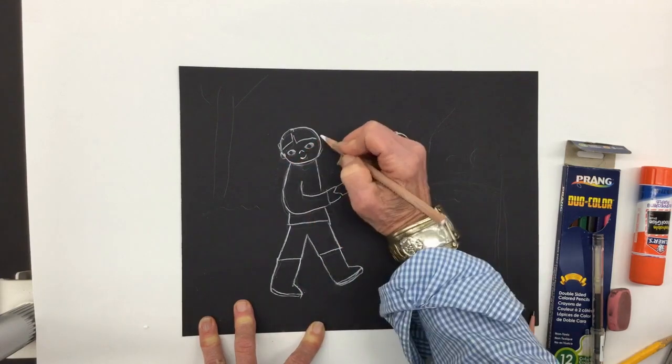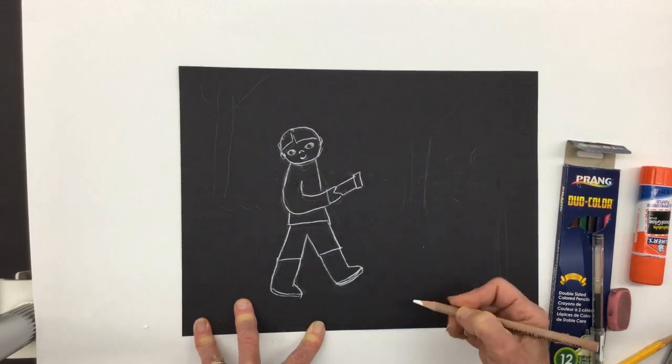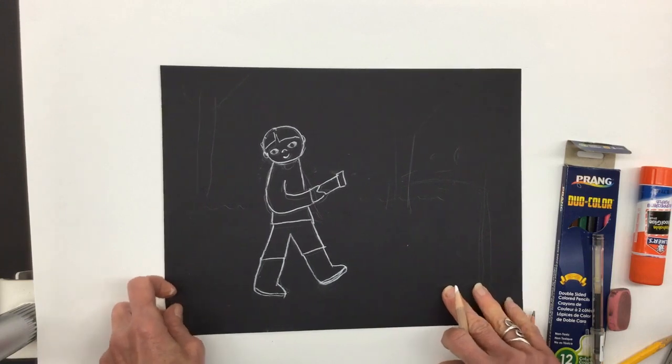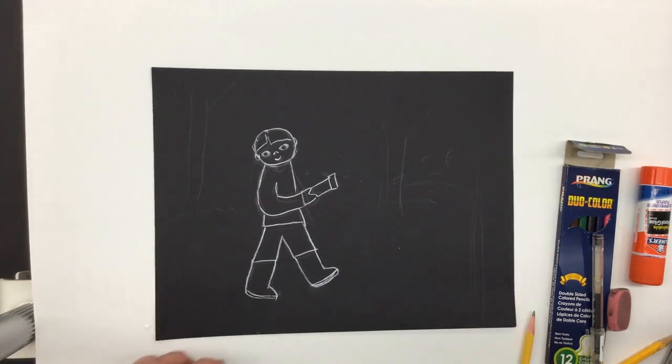I think I'll add some little ears as well. So once you have that, you have the beginning of your picture. Now I'm going to show you the trick for adding the flash from the flashlight.